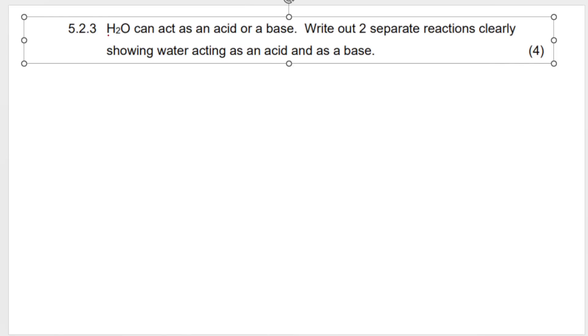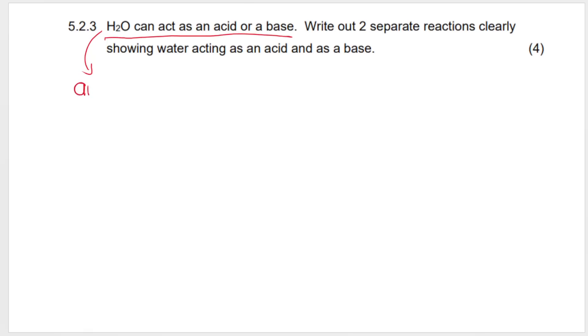My next question says that water can act as an acid or a base. Now, the term for this, water can act as an acid or base, is an ampholyte. Water is ampholytic. Water is an ampholyte. So depending on what it reacts with, it can be an acid or a base. And they want me to write out two separate reactions, clearly showing water acting as an acid and as a base. So let's do water as a base first. In order for water to act as a base, it needs to react with something that is a clear acid. So let's say HCl. Remember, bases are proton acceptors. So we want to make the H2O accept a proton, which means that this is going to be the acid. It's going to donate an H+, making this become H3O+, and what's left over from the acid when it donates the proton, in this case, Cl-. This is essentially the ionization of an acid in water. Water is basically acting like the base.